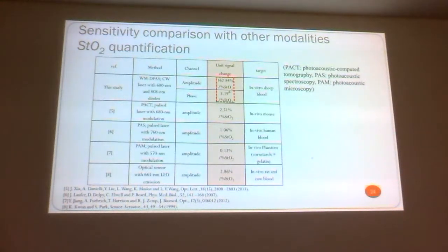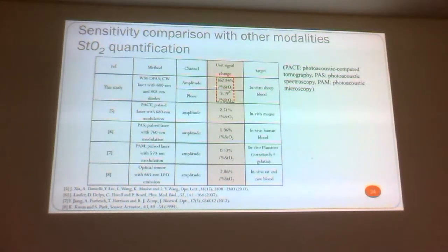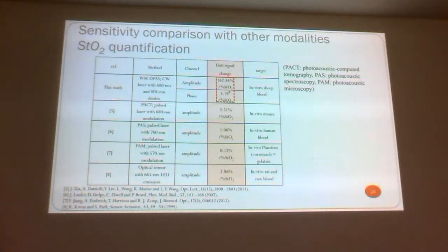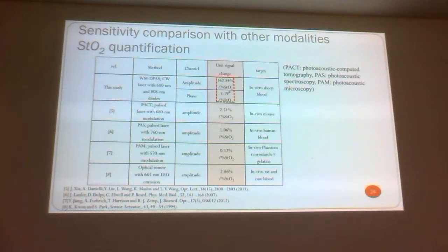Comparing to other photoacoustic and optical methods: we get changes of 162.84% for total hemoglobin and 5.9% phase for amplitude using in vitro sheet blood. For photoacoustic computed tomography or pulse laser at 760 nm, you get much smaller changes. This is one of the cases where frequency domain wins. The reason for this sensitivity is that with acoustic waves, time is on your side — you look at the delay time, and acoustics has a delay whereas optics doesn't. The center of gravity of your absorption profile moves in and out, giving you the small phase difference you need.